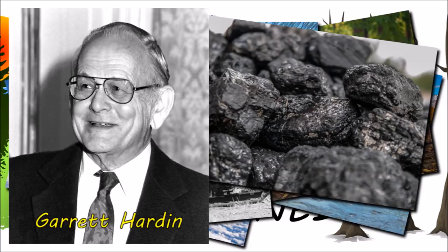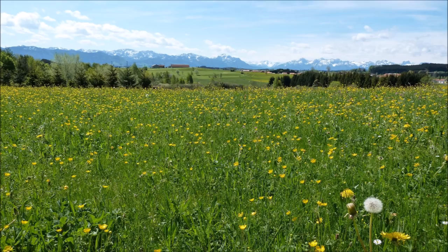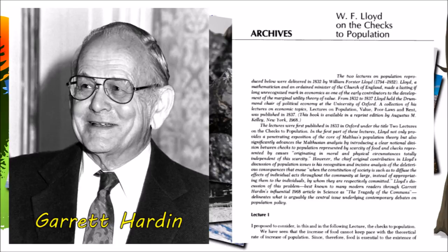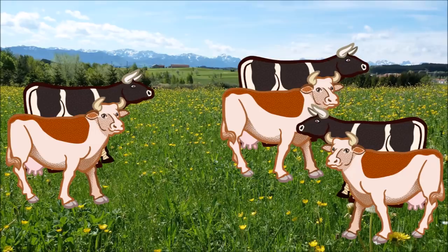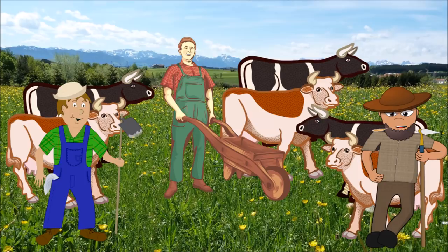In his pamphlet, Lloyd gives an example of a shared parcel of land. Neighbouring farmers were entitled to let their cows graze, as was custom in English villages. Let's say there are three farmers – Geoff, David, and Donald. It's understood that each farmer can only graze a certain number of cows in order to preserve the pasture. The farmers are happy as they are getting a predictable supply of milk, and the cows are happy munching away on grass.